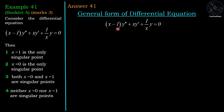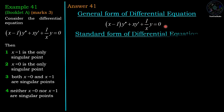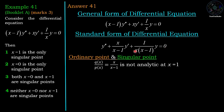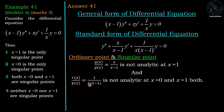For the given equation (x-1) y'' + x y' + (1/x) y = 0, dividing by (x-1) gives y'' + [x/(x-1)] y' + [1/(x(x-1))] y = 0. The first rational function Q/P = x/(x-1) is not analytic at x = 1. The second, R/P = 1/(x(x-1)), is not analytic at x = 0 and x = 1, since substituting either value makes it go to infinity.